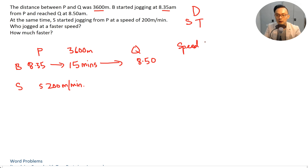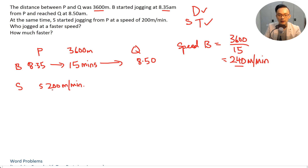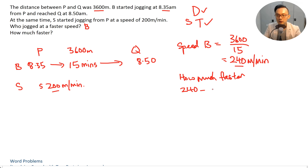Speed of B equals distance over time. The distance is 3600, the time is 15 minutes, which equals 240 meters per minute. Comparing 240 and 200, B was faster. How much faster? 240 minus 200 equals 40 meters per minute faster.